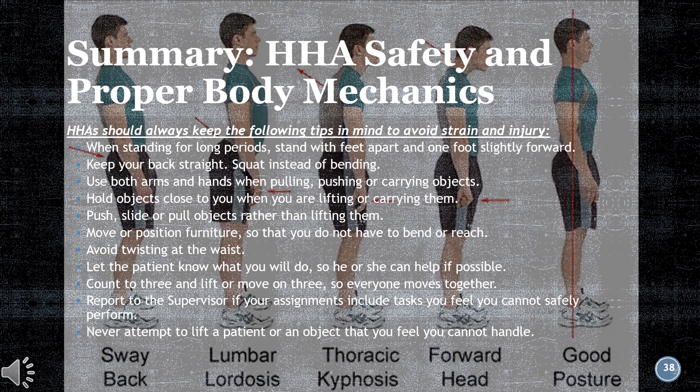Summary — HHA safety and proper body mechanics tips: when standing for long periods, stand with feet apart and one foot slightly forward; keep your back straight; squat instead of bending. Use both arms and hands when pulling, pushing, or carrying objects. Hold objects close to you when lifting or carrying. Push, slide, or pull objects rather than lifting them. Move or position furniture so you do not have to bend or reach. Avoid twisting at the waist. Let the patient know what you will do so they can help if possible. Count to three and lift or move on three so everyone moves together. Report to the supervisor if assignments include tasks you feel you cannot safely perform. Never attempt to lift a patient or object you feel you cannot handle.